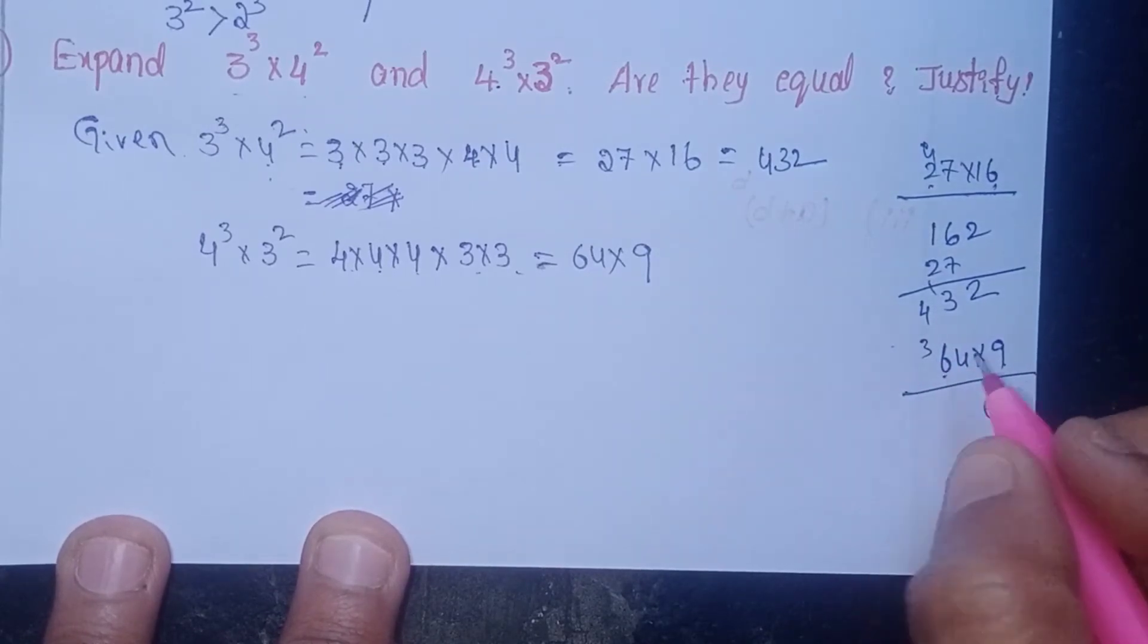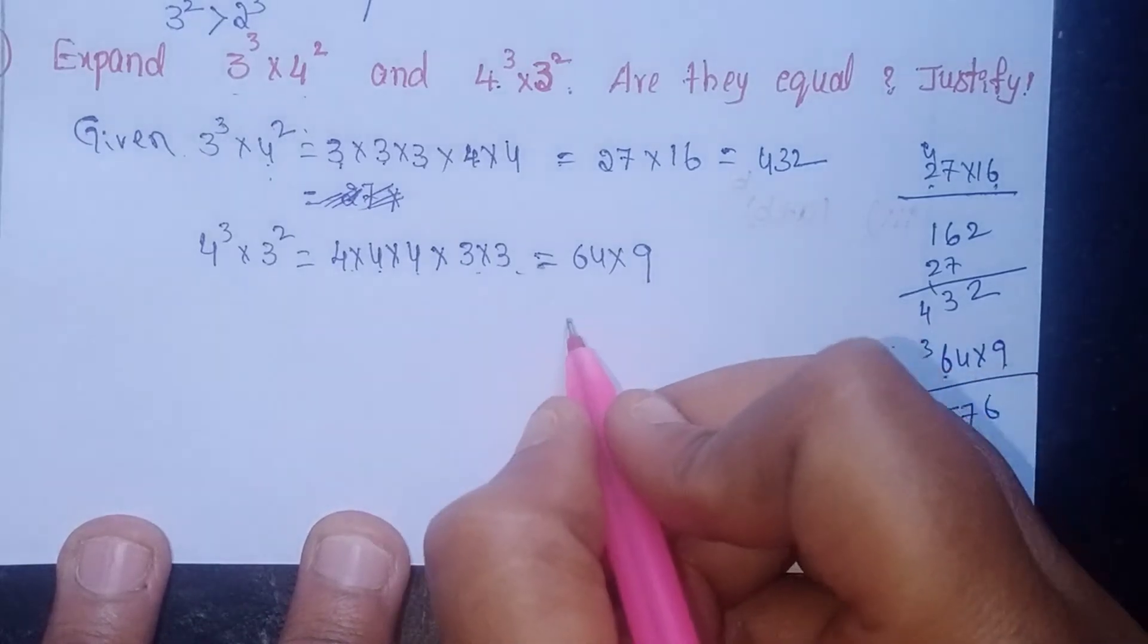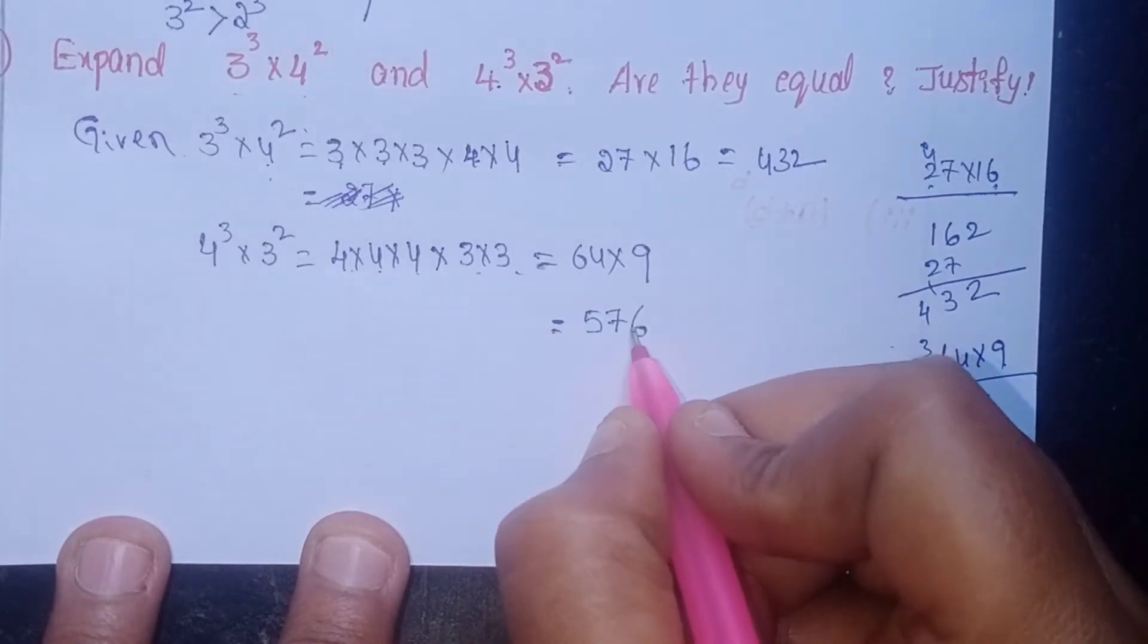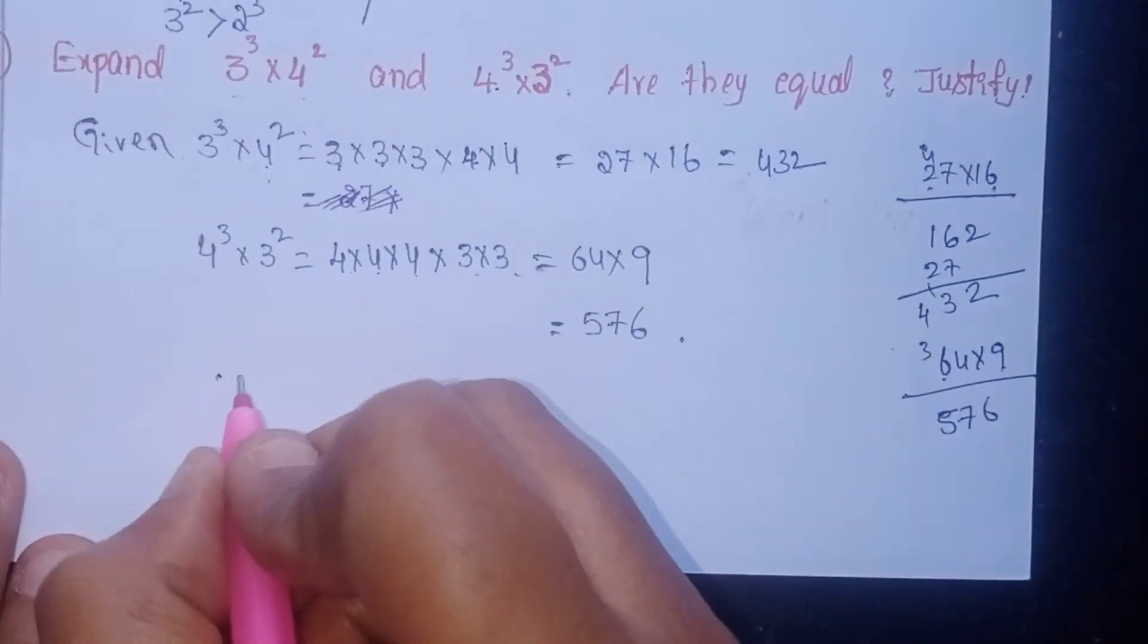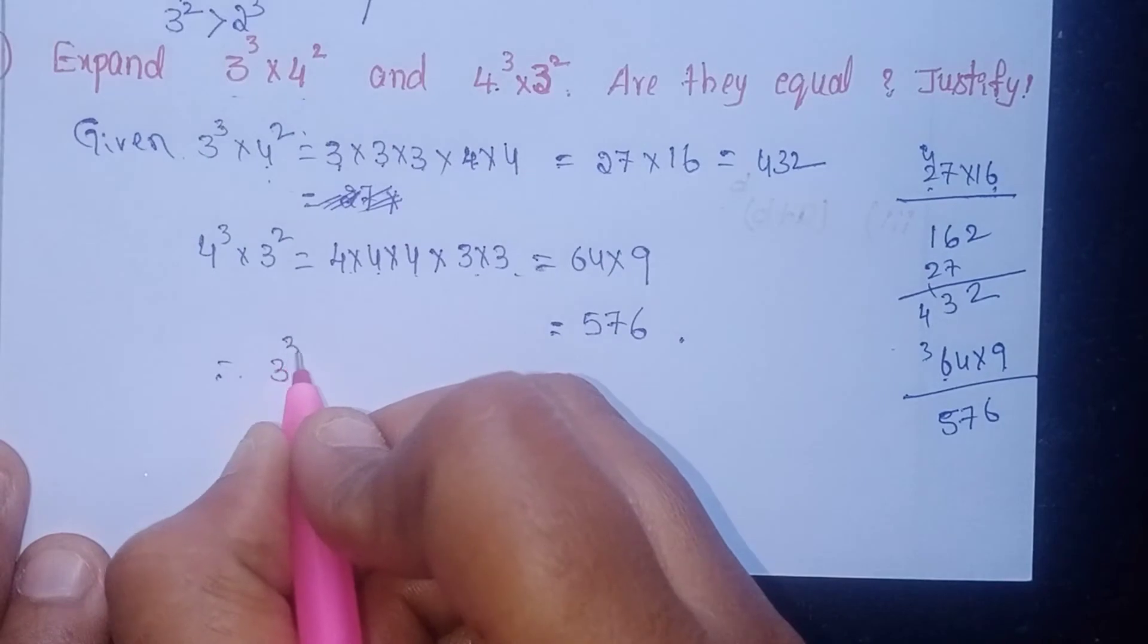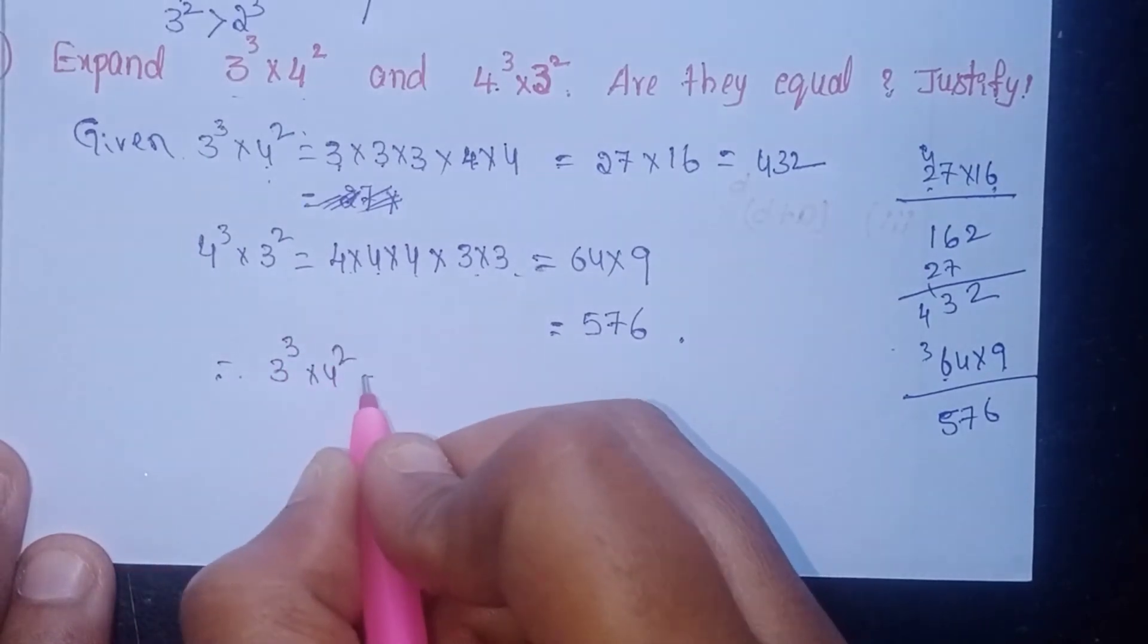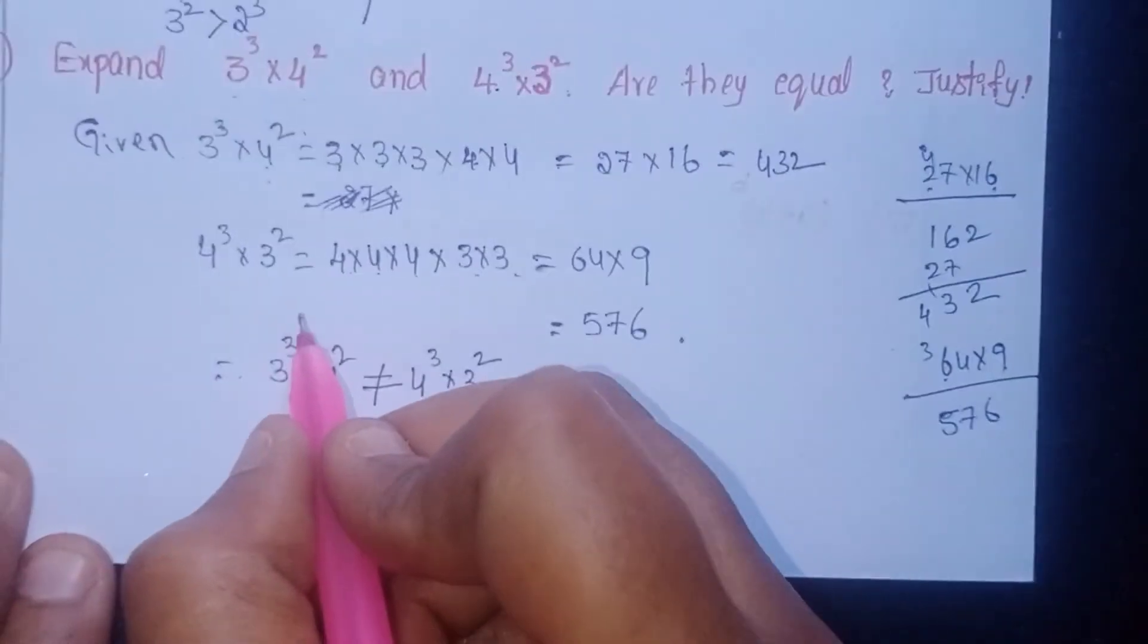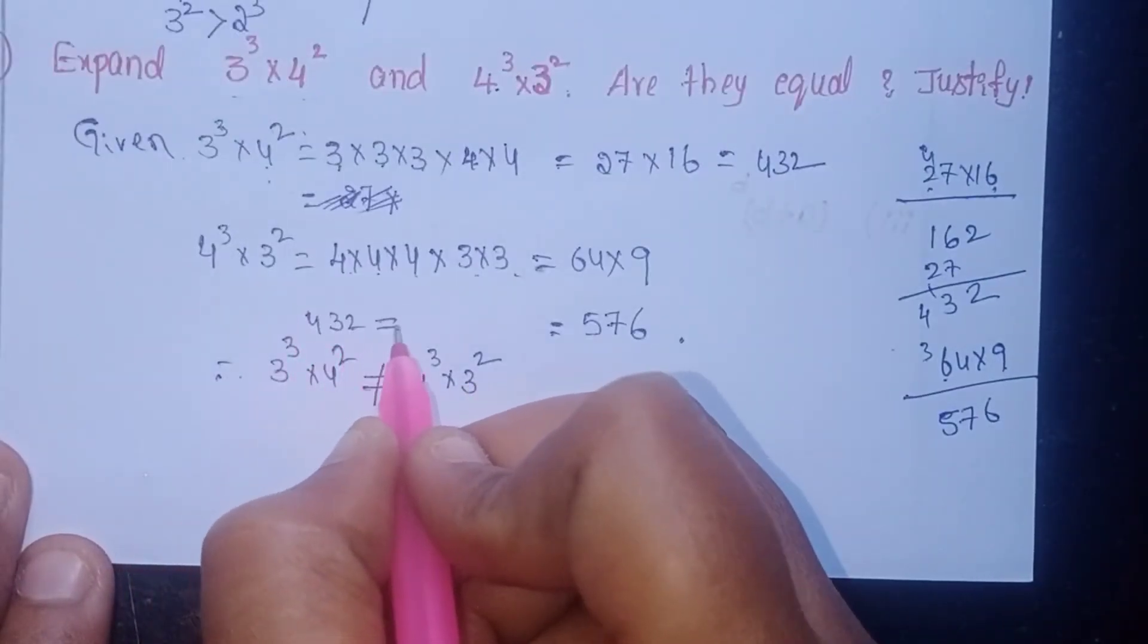Therefore, 3³×4² is not equal to 4³×3², because 432 is not equal to 576. Therefore, they are not equal.